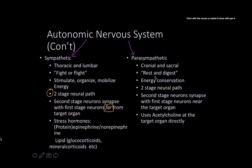The parasympathetic is the exact opposite in terms of energy usage — conserving energy, resting and digesting. It also has a two-stage neural path, but here neurons synapse with first-stage neurons located near the target organ. There is no specific hormone involved in the parasympathetic response; instead it uses acetylcholine, which acts directly at the target organ.